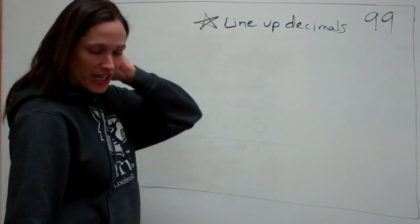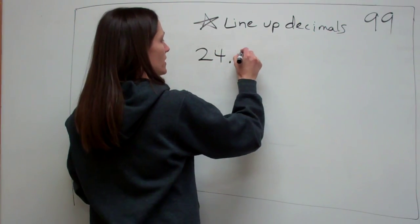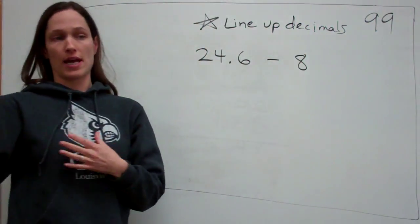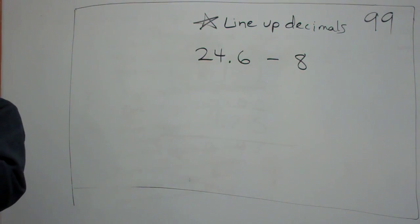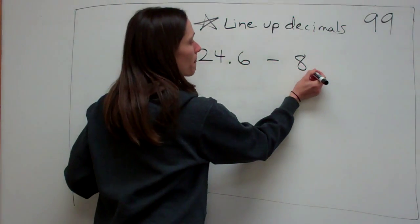Now we done? Let's look at subtracting. Okay, 24.6 minus 8. Okay. What's the most important thing that we remember in this? Put zeros. Put zeros, but before that? Put a decimal after 8. Put a decimal after 8. Okay.